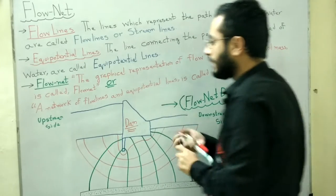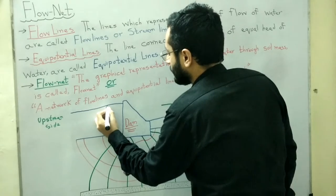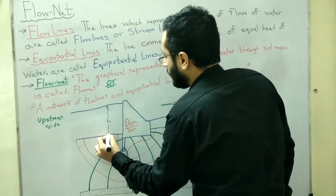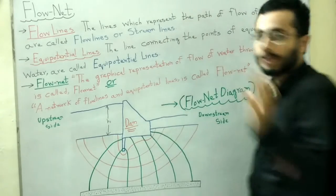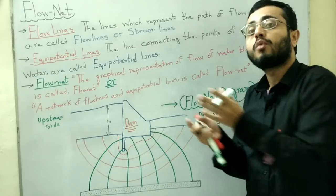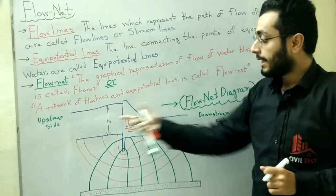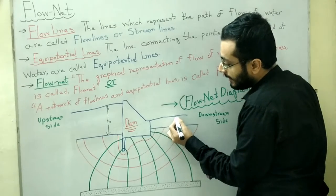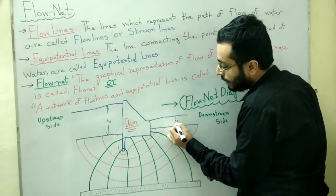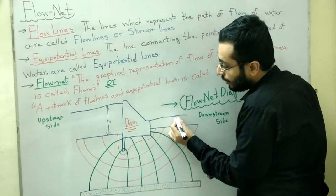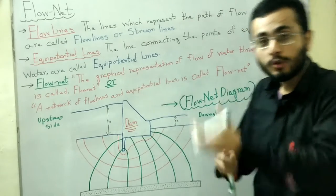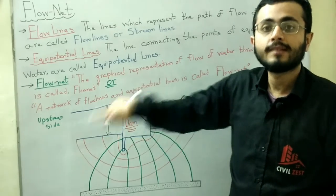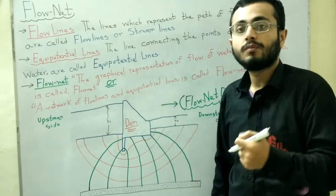The height h1 is the water head at the upstream side, and h2 is the lower head at the downstream side. The water will always move from the upstream side to the downstream side — from high head to low head.